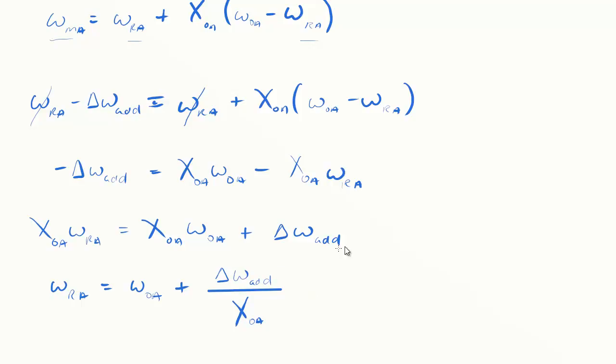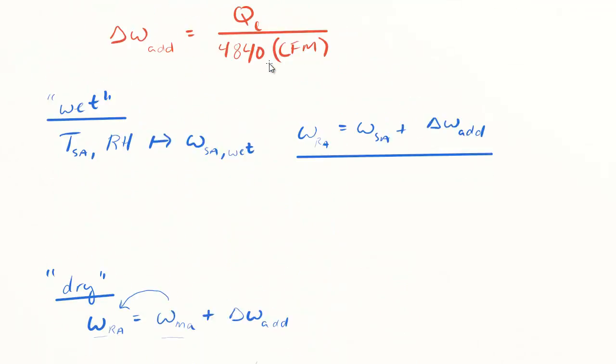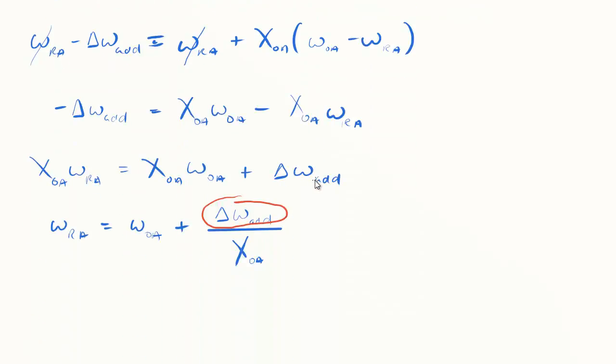Divide both sides by X_OA and we get our final formula for the return air absolute humidity ratio. That X_OA cancels, I get just the outside air plus the omega added in the space divided by that outside air fraction.